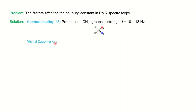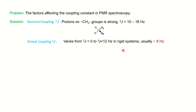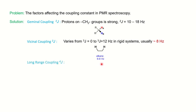Vicinal coupling is a three-bond coupling and varies from 0 to 12 Hz depending on the system. Usually you can consider around 8 Hz for general vicinal coupling. In alkenes, vicinal coupling — which is a three-bond coupling between protons on adjacent carbons — shows 6 to 8 Hz.